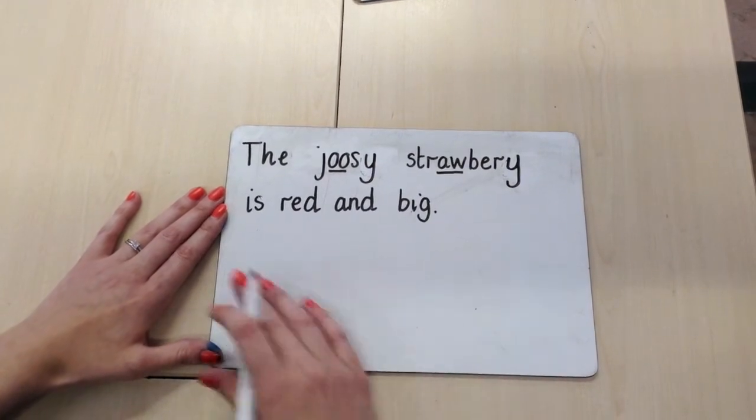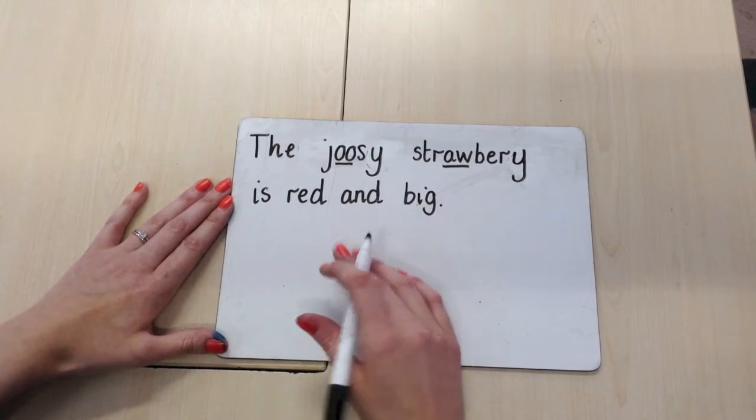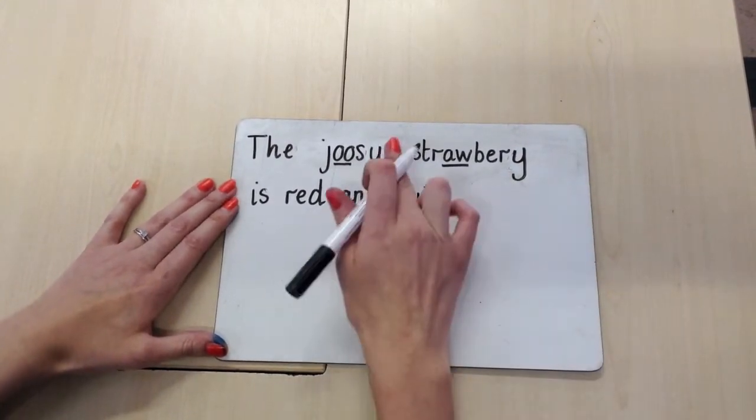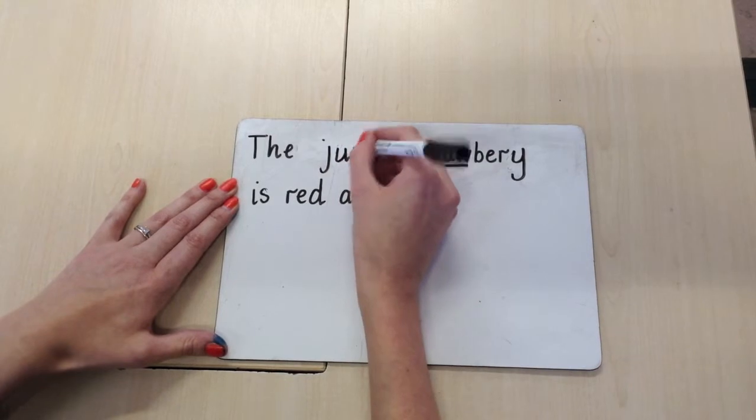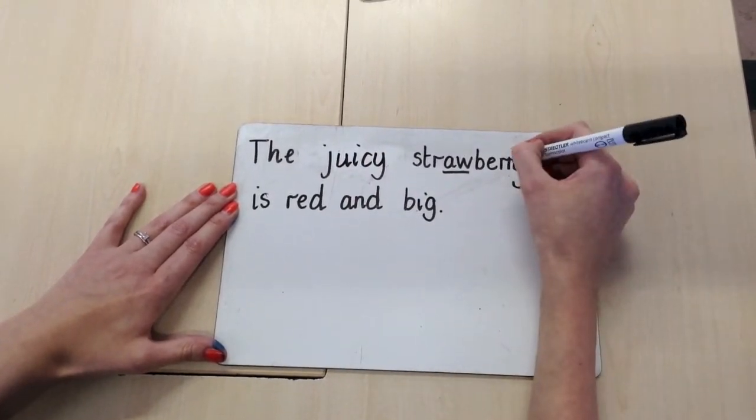And as I said before, as children become more confident to use their phonics when writing, it's really important that we then begin to correct their spellings. And we know that juicy would be J-U-I-C-Y, and strawberry has got a double R.